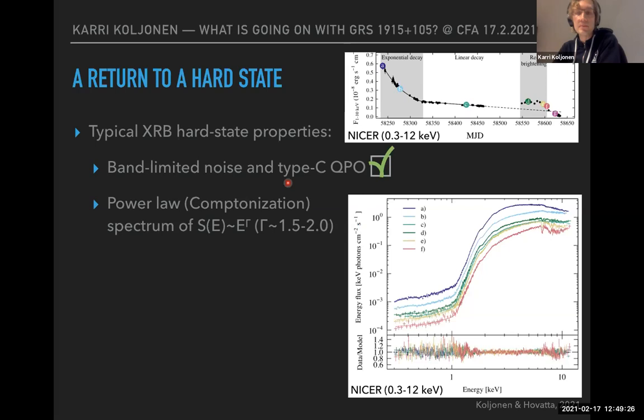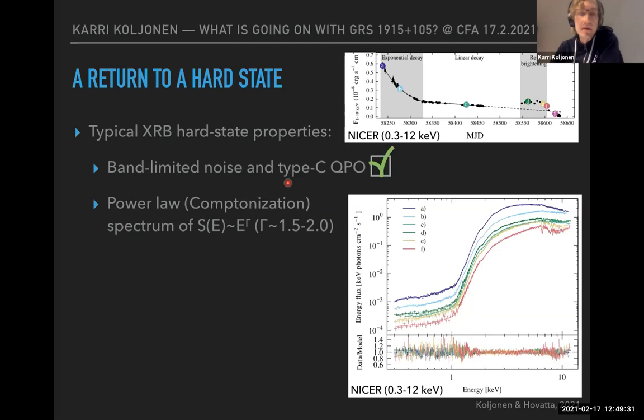The band-limited noise and type-C QPO are very typical for the X-ray binary hard state, and we see them during the outburst decay here. The X-ray spectrum from the optically thin inner flow is called Comptonization — a power law with index of about 1.5 — and this is exactly what we observe in the NICER spectra of GS 1915.